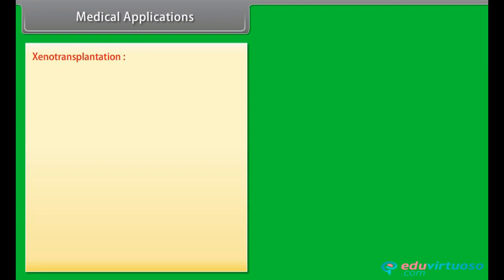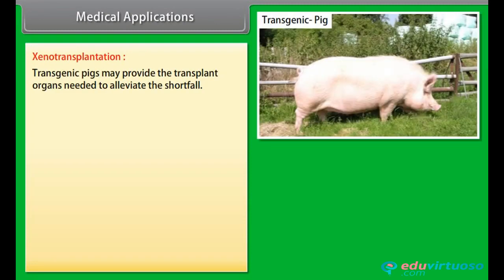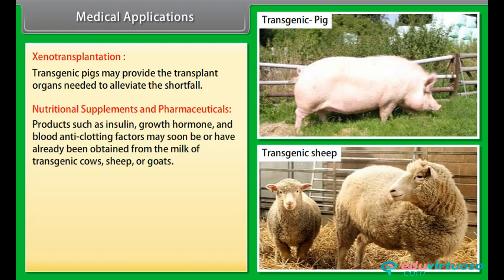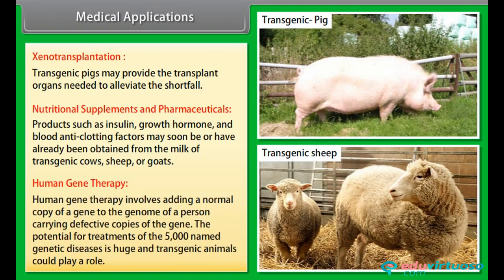Medical applications. Xenotransplantation: transgenic pigs may provide the transplant organs needed to alleviate the shortfall. Nutritional supplements and pharmaceuticals: products such as insulin, growth hormone, and blood anti-clotting factors may soon be or have already been obtained from the milk of transgenic cows, sheep, or goats. Human gene therapy involves adding a normal copy of a gene to the genome of a person carrying defective copies. The potential for treatment of the 5,000 named genetic diseases is huge, and transgenic animals could play a role.